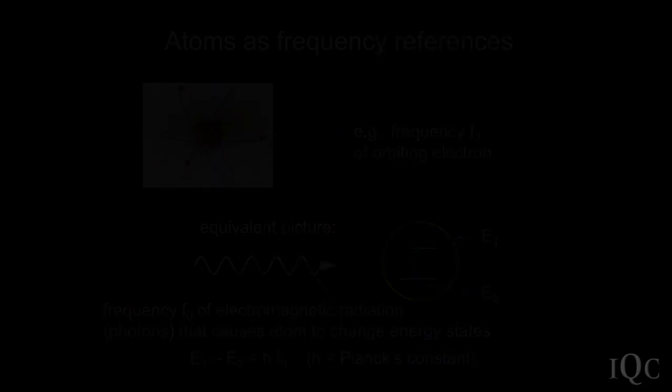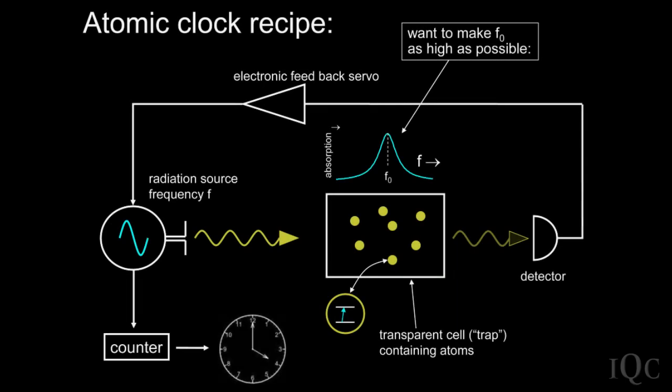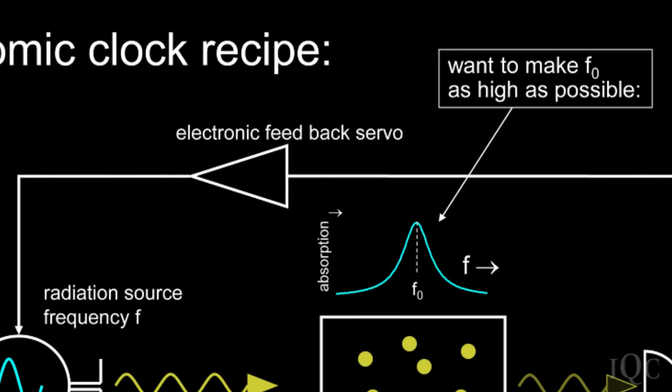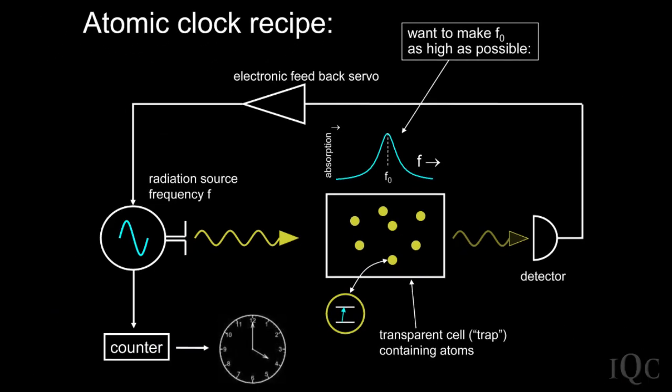To generate time from that, the simplest way is, if the radiation is tuned in synchronism with these natural vibrations, then that radiation is absorbed. When you find that condition of maximum absorption, then you simply count cycles of this oscillator that's producing the radiation.